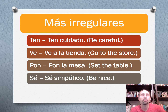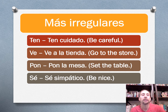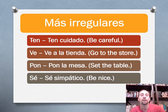And we have some even more irregular ones. So tener goes to ten — like ten cuidado, be careful or have caution. Ir, very irregular, goes to ve — ve a la tienda, go to the store. And poner goes to pon — pon la mesa, set the table. And ser goes to sé — sé with an accent — sé simpático, be nice.